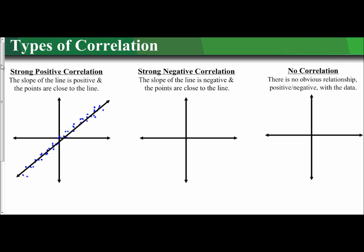The strong part refers to how close the data is to the line, and the positive part refers to the slope of said line.